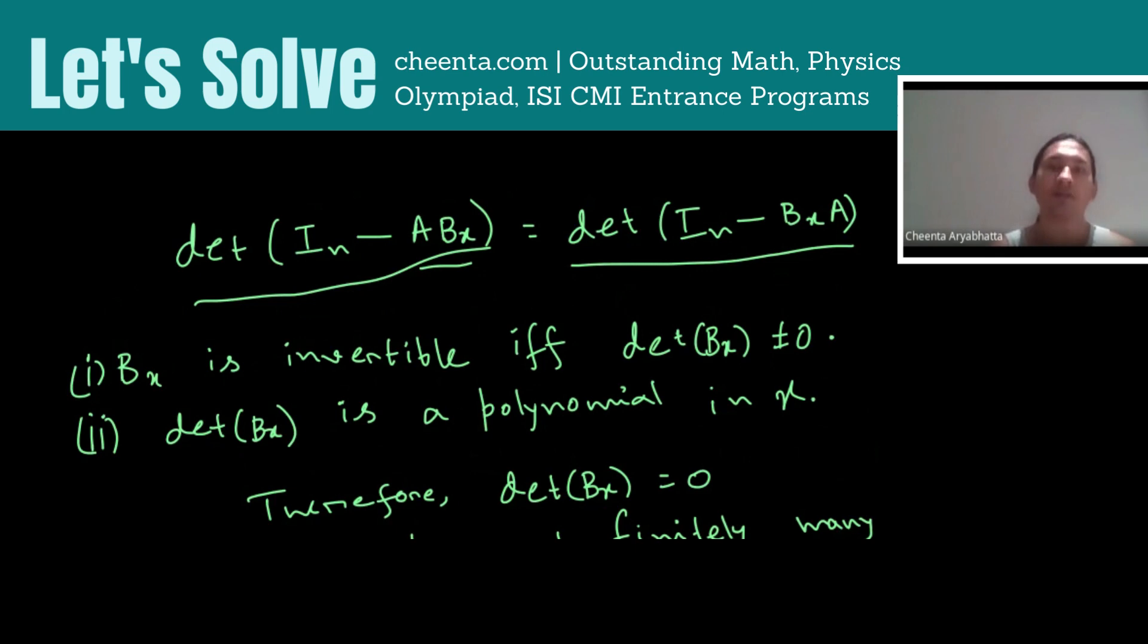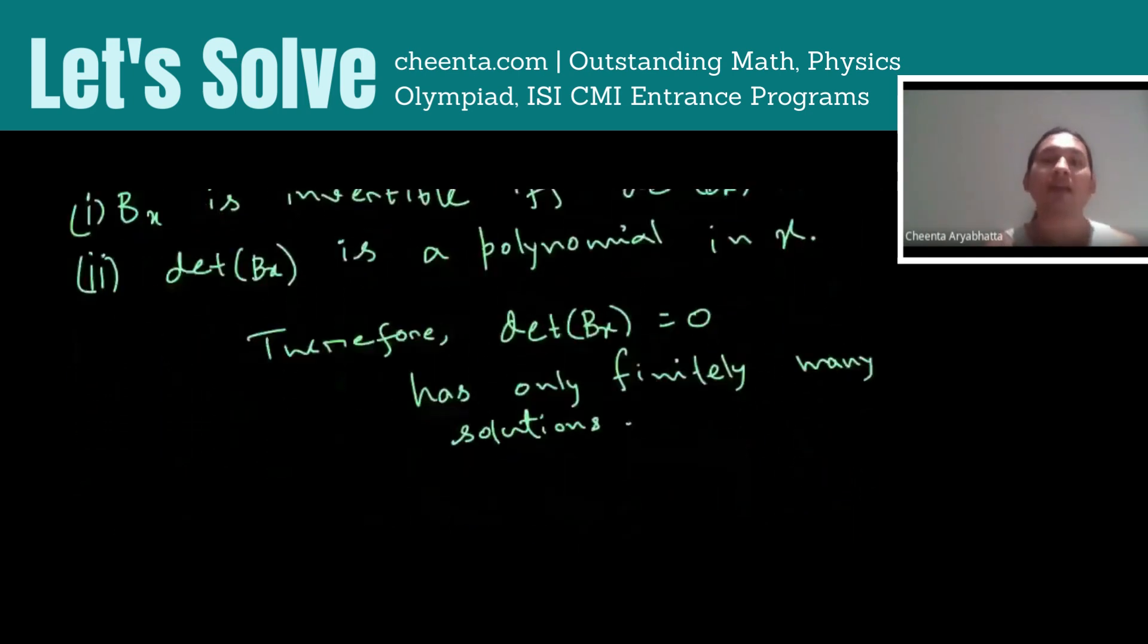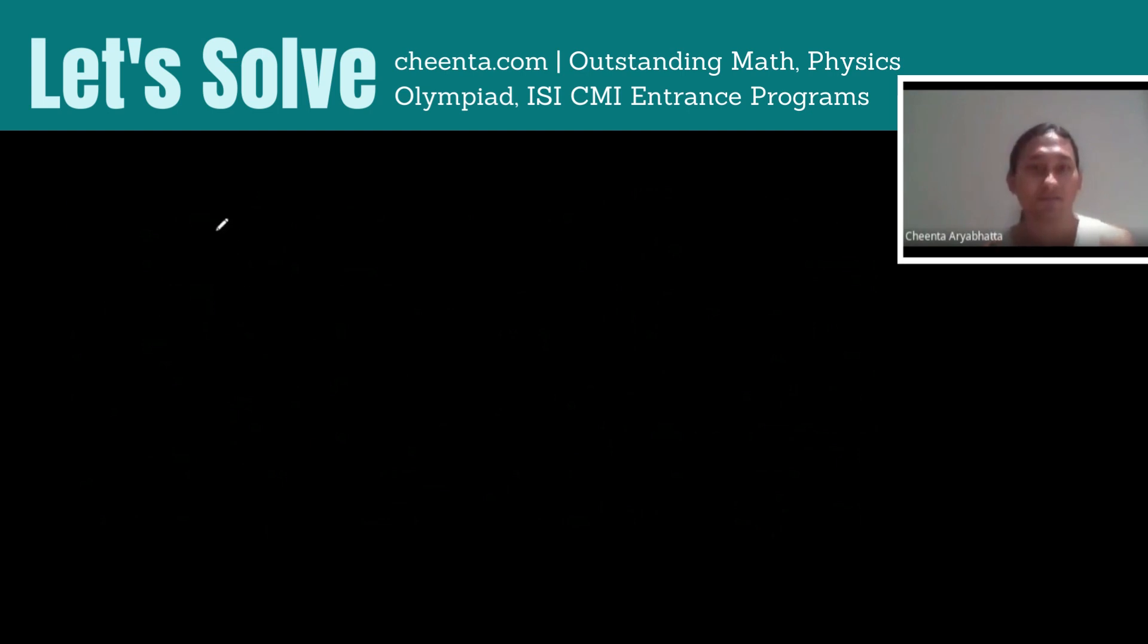Therefore, the X doesn't matter. In particular, we can choose X equal to zero which gives B0 equal to B and we have determinant of IN minus AB equal to determinant of IN minus BA.